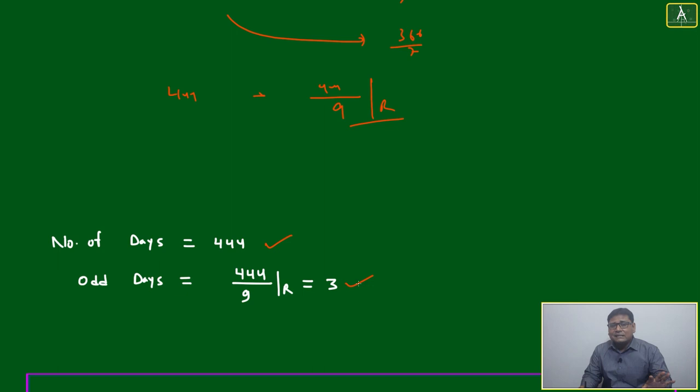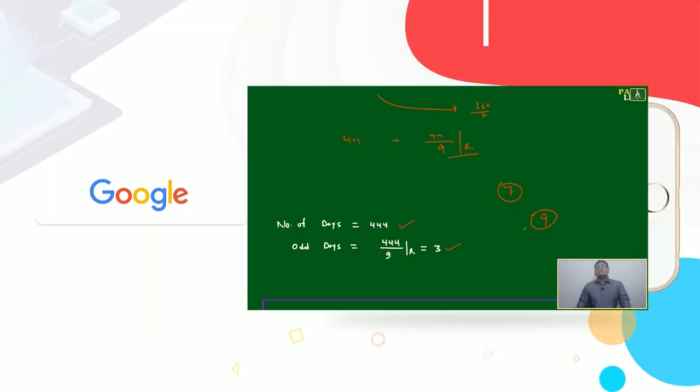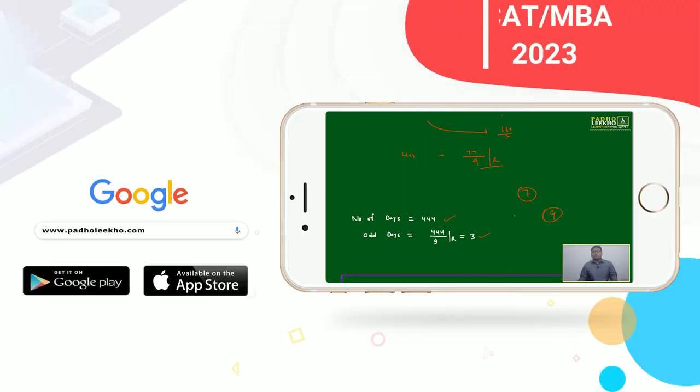Now, we cannot say three means Wednesday. Be careful - if the question deviates and gives a calendar with 444 days and nine days in a week, the meaning of 3 will not be Wednesday. Three is Wednesday when the number of days in a week is seven. Here, nine names will be there, and we don't know which day it will be.